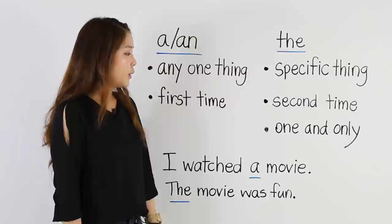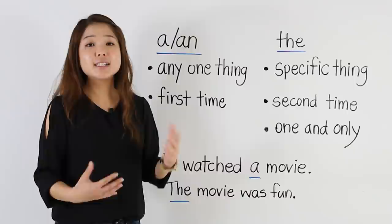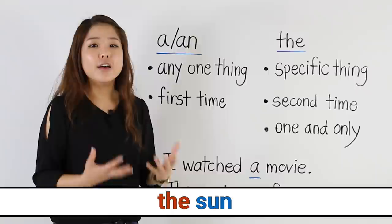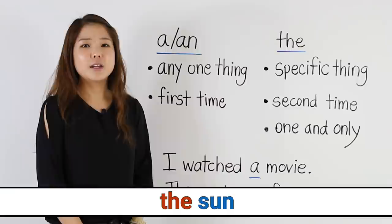I also use the when I'm talking about a noun where there's only one and only. For example, there's only one sun. When I look at the sky, there's only one sun. So I say, the sun. The sun is hot. I cannot say a sun — that's wrong. When there's one and only, we say the sun.